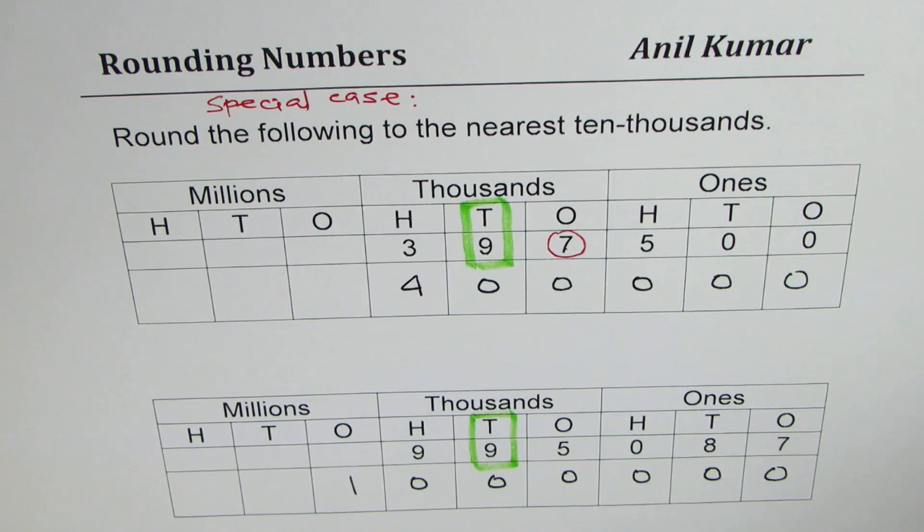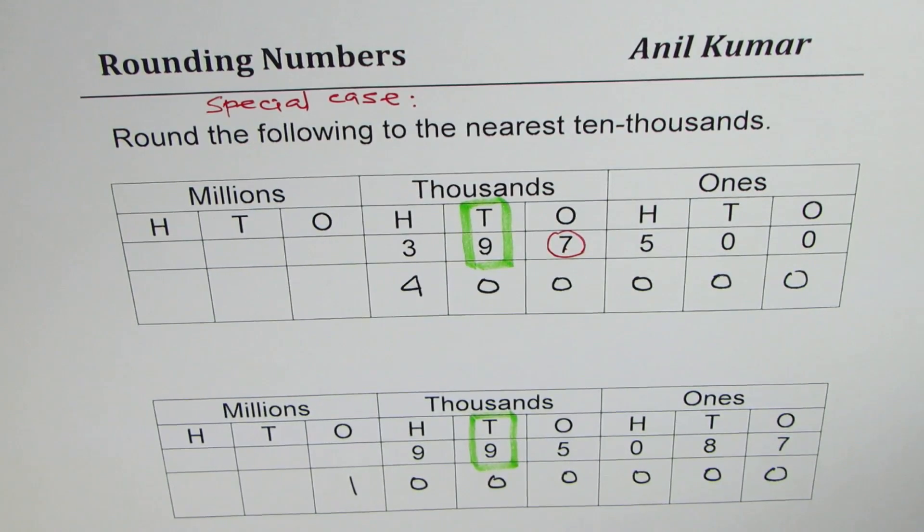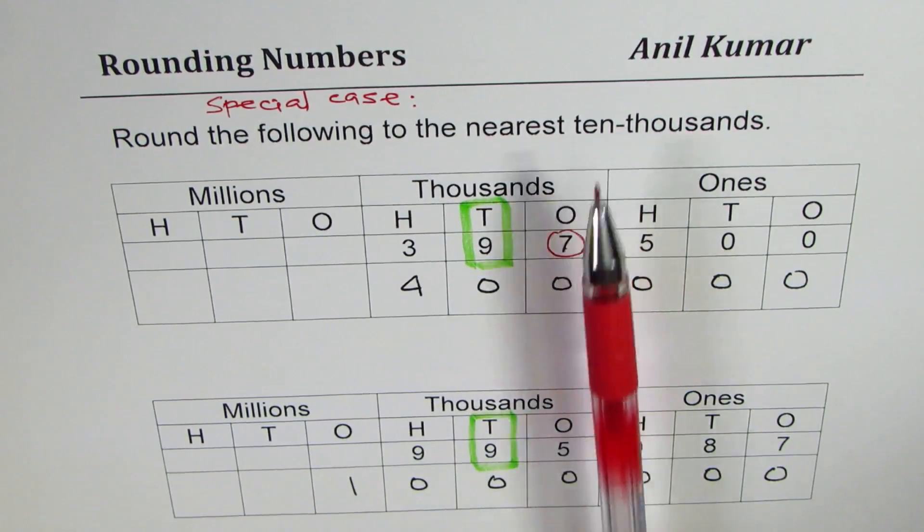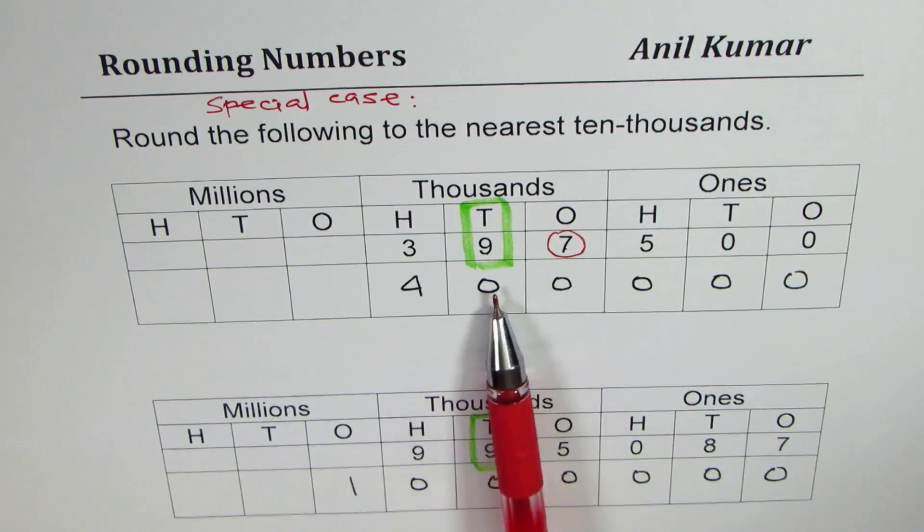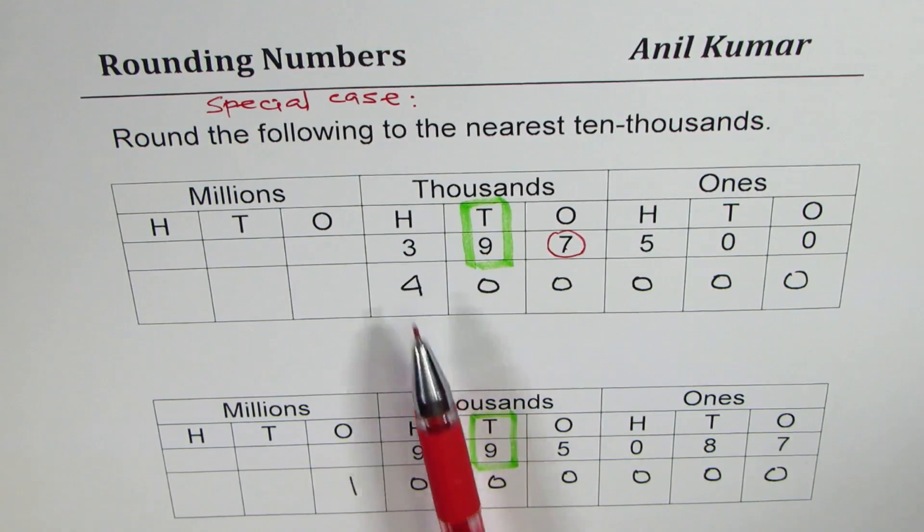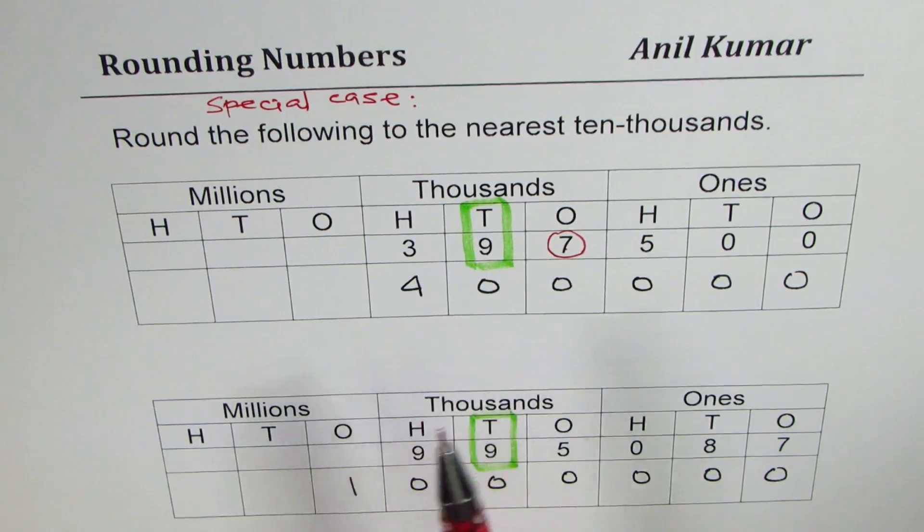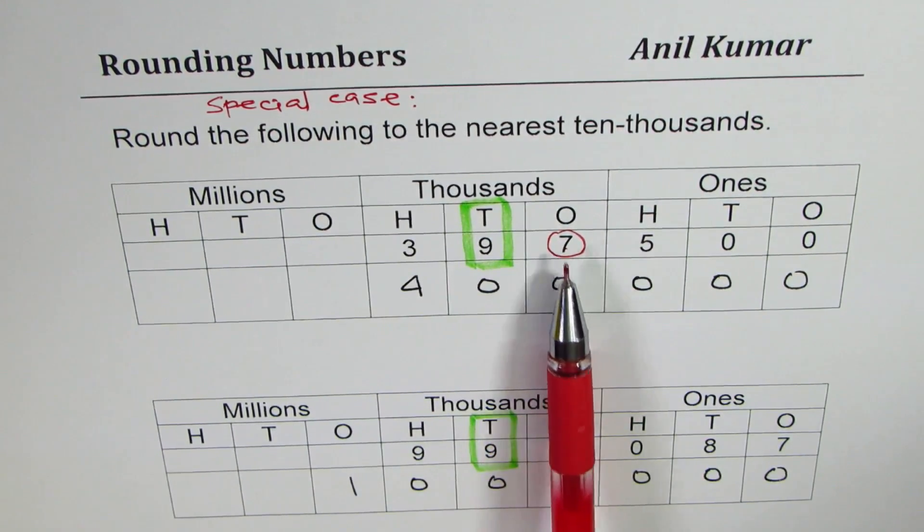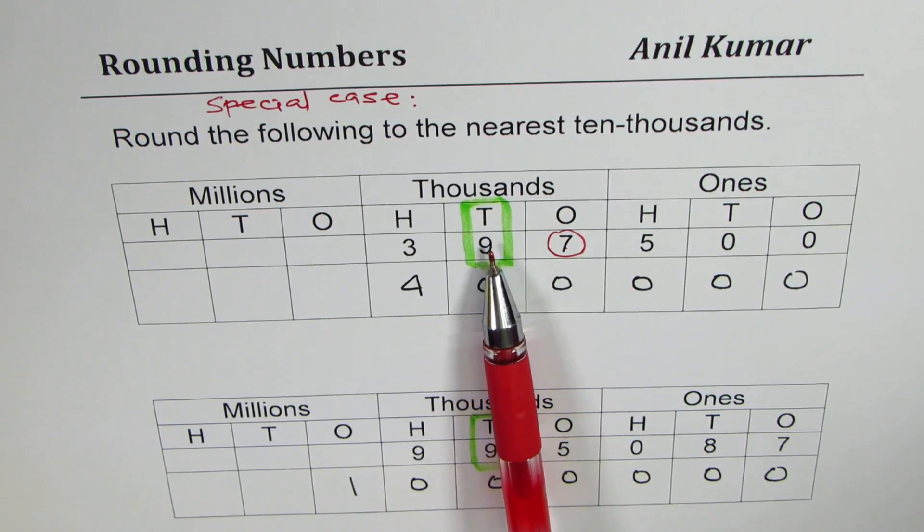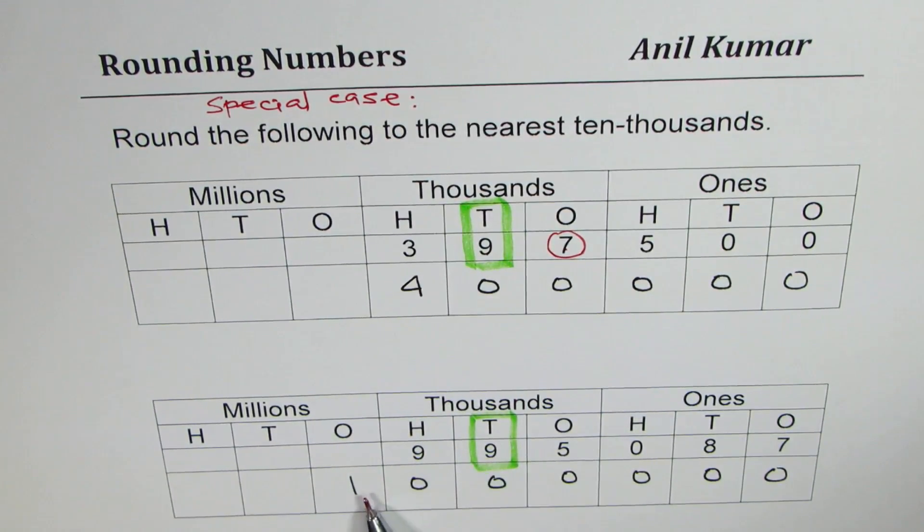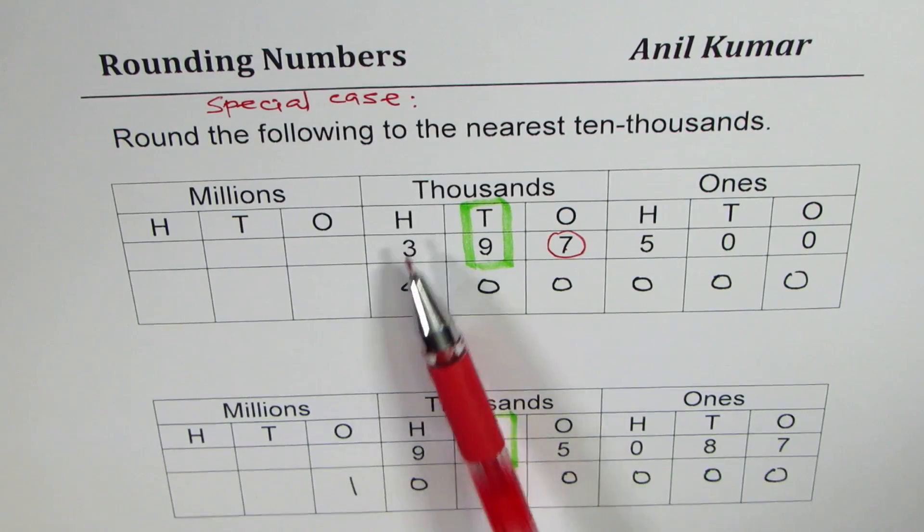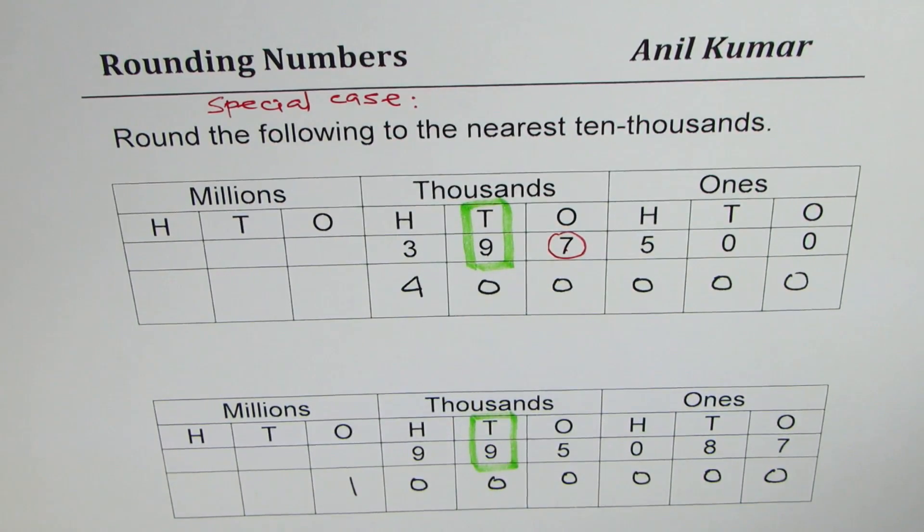However, look at this video once again and try to understand the concept. What we are trying to do here is first identify the place value of 10,000. Retain that number. On the right, put all the zeros. On the left, normally we get the same number, but here it is an exception. If on the right of the place value, we have five or higher, it rounds by one more. So 39 becomes 40. 39 plus one is 40. 99 plus one becomes 100. And that is why in this particular example, the place value for thousands also changed. I hope you understand and appreciate it. Thanks for watching and all the best.